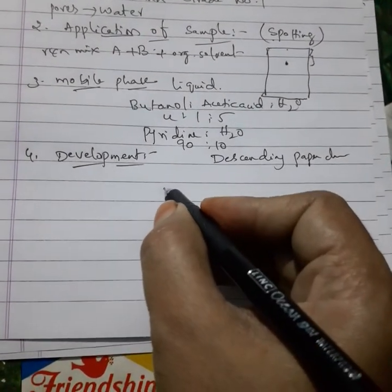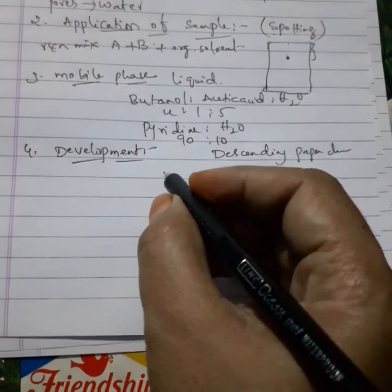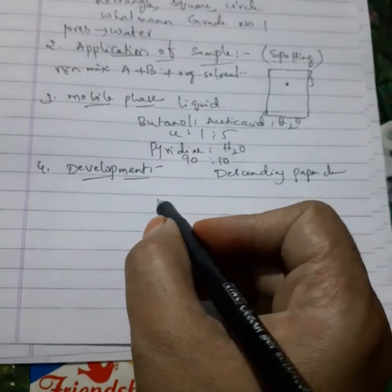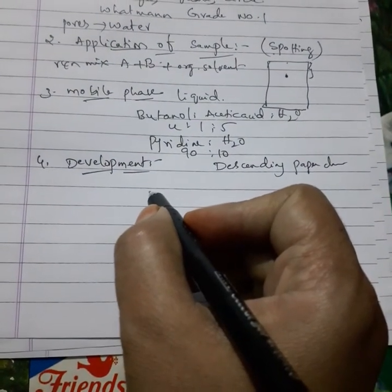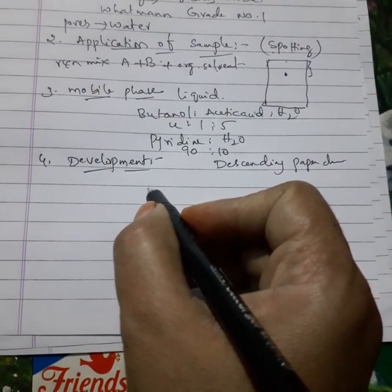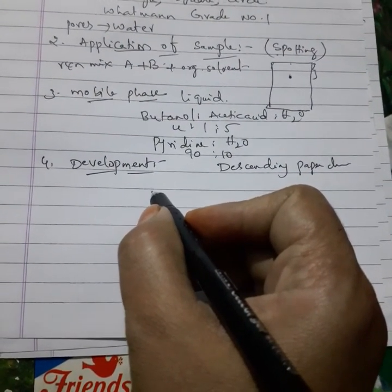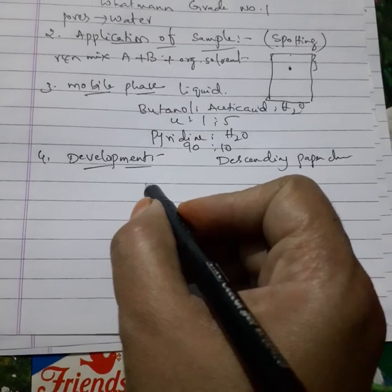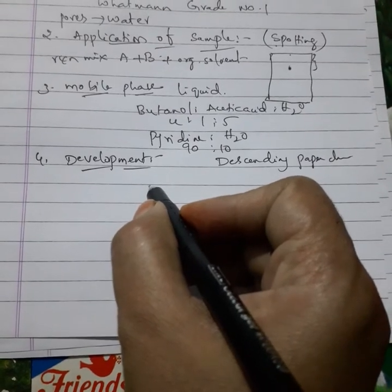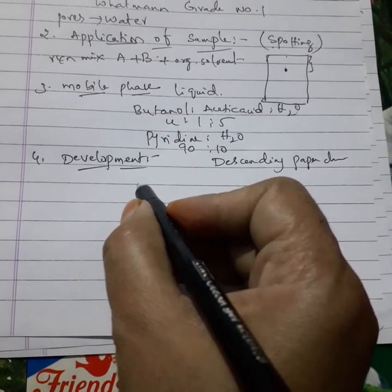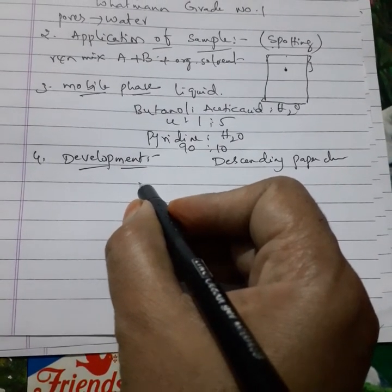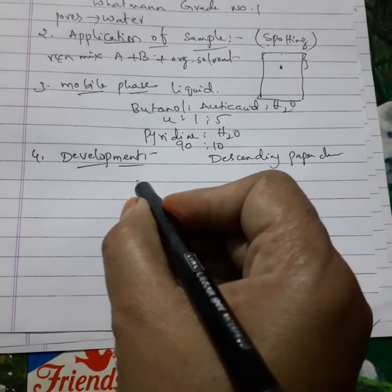In descending paper chromatography, there is a special instrument - maybe of cylindrical or rectangular shape. Let me describe this setup.